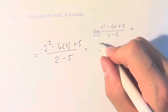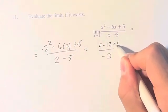On top, we have 2 squared, which is 4, minus 6 times 2, which is 12, plus 5.